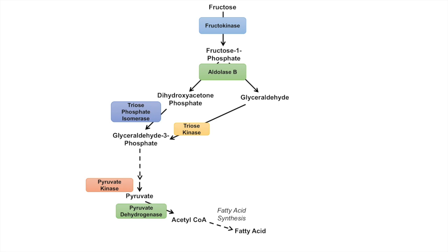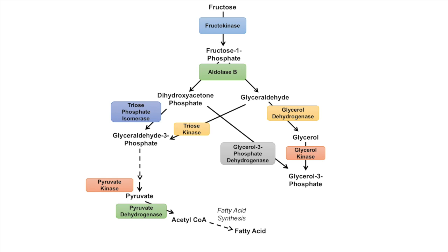With glyceraldehyde, it can be processed by glycerol dehydrogenase to form glycerol, which is then acted on by glycerol kinase to form glycerol 3-phosphate. Glycerol 3-phosphate can also be produced from dihydroxyacetone phosphate by glycerol 3-phosphate dehydrogenase. Glycerol 3-phosphate and fatty acids can undergo esterification to form triglycerides, meaning fructose can completely produce triglycerides on its own. Prolonged unregulated triglyceride production can lead to non-alcoholic fatty liver disease and obesity, which can then lead to the onset of diabetes.